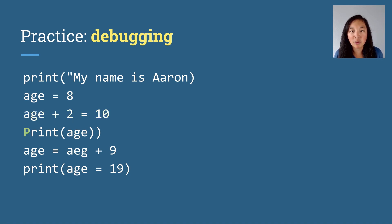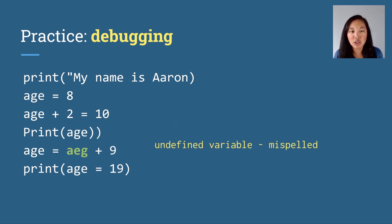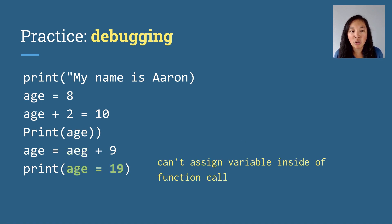Here the p should be lowercase and there's an extra parentheses. Here this is not a variable — it seems to be misspelled. And here we can't assign a variable inside of a function call.